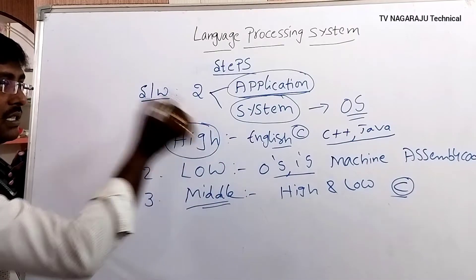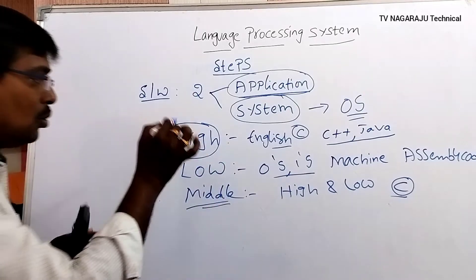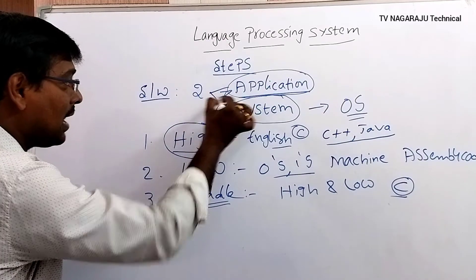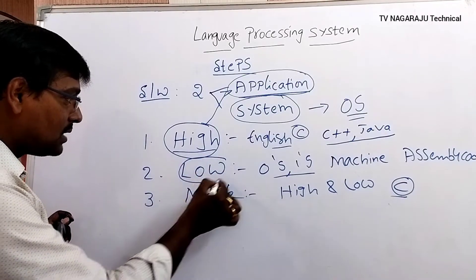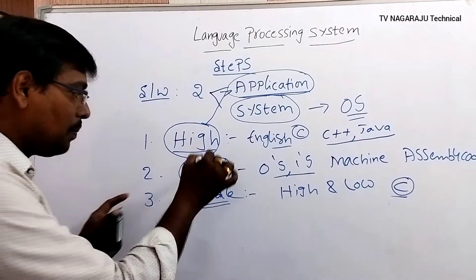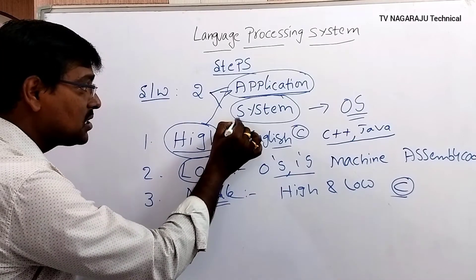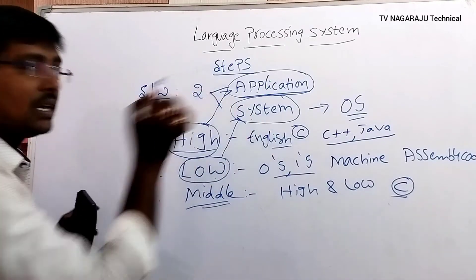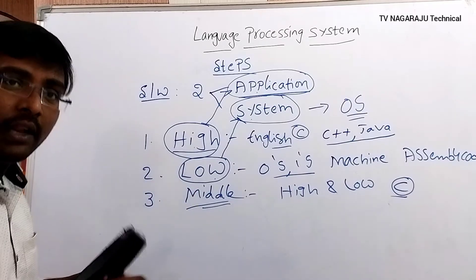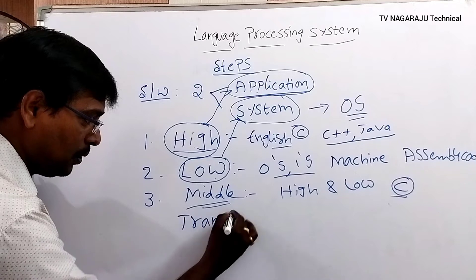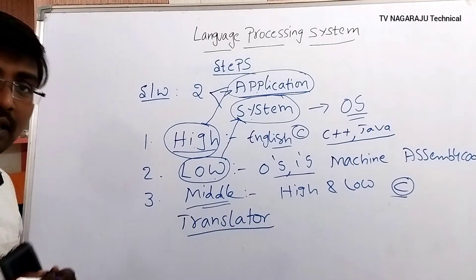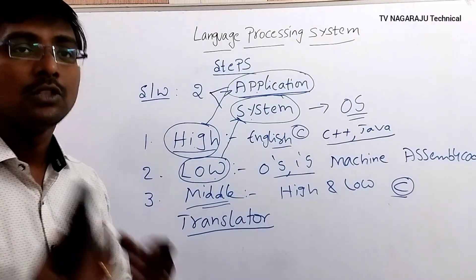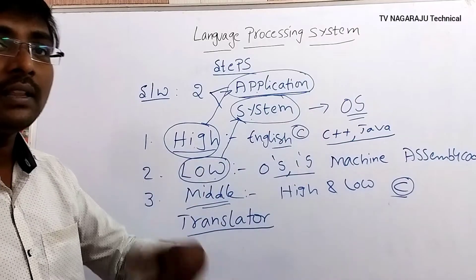High level language is generated by the user — users understand only high level language, and application software is generated using it. Low level language is understandable by the machine, and system software is developed using it. Therefore, we require a translator: the high level language must be converted into low level language for the system to understand it.